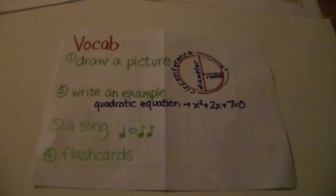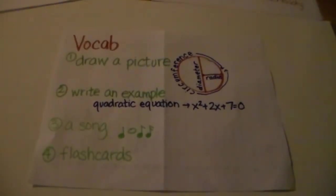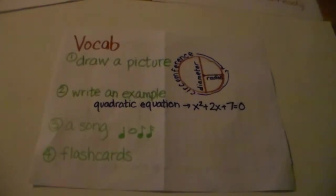And then inside there's a line segment, the diameter, and another line segment labeled radius. You can write an example. Here I've written an example of a quadratic equation, x squared plus 2x plus 7 equals 0. Maybe it helps you to write a song or to use flashcards.